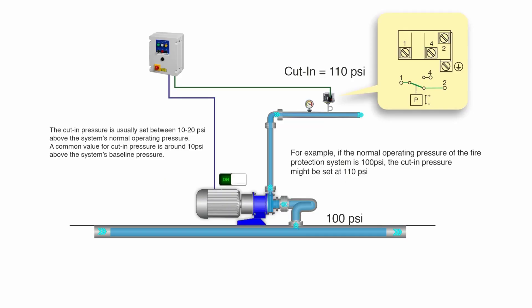The cut-in pressure is usually set between 10 to 20 psi above the system's normal operating pressure. A common value for cut-in pressure is around 10 psi above the system's baseline pressure. For example, if the normal operating pressure of the fire protection system is 100 psi, the cut-in pressure might be set at 110 psi.